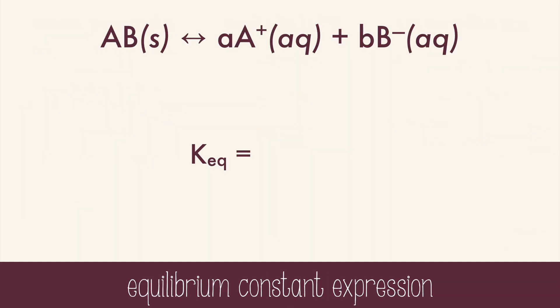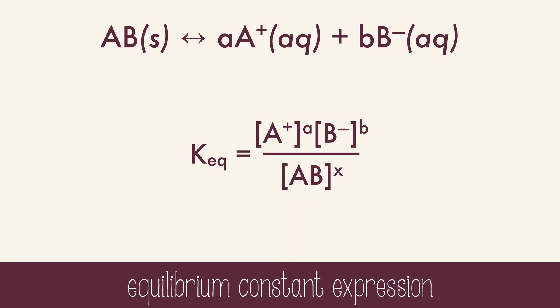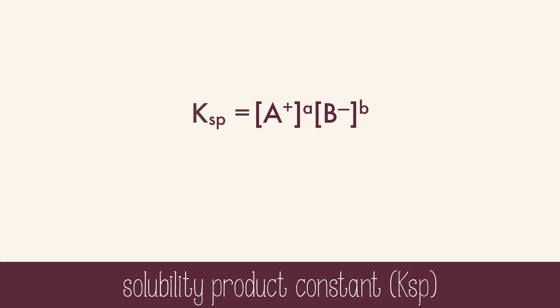I've modified this expression to be representative of a typical compound dissociating into cations and anions. On the bottom of the expression is the solid. The reality is that as long as the solid is present, the concentration of the solid is constant. So the constant can be combined with the equilibrium constant to form a new sort of constant called the solubility product constant, or Ksp. It's simpler than the equilibrium constant because it will never include the solid, only the aqueous ions.